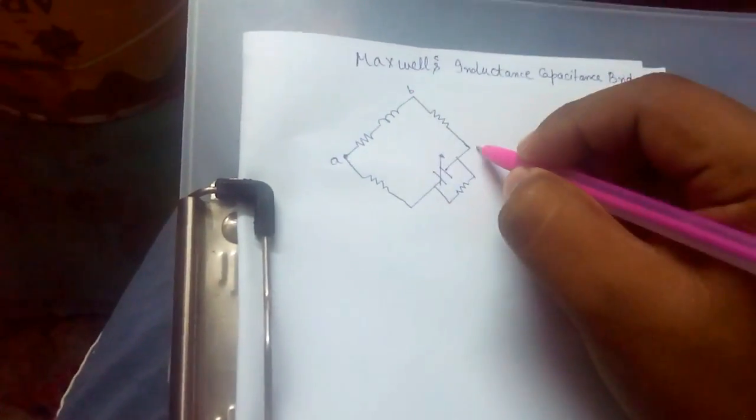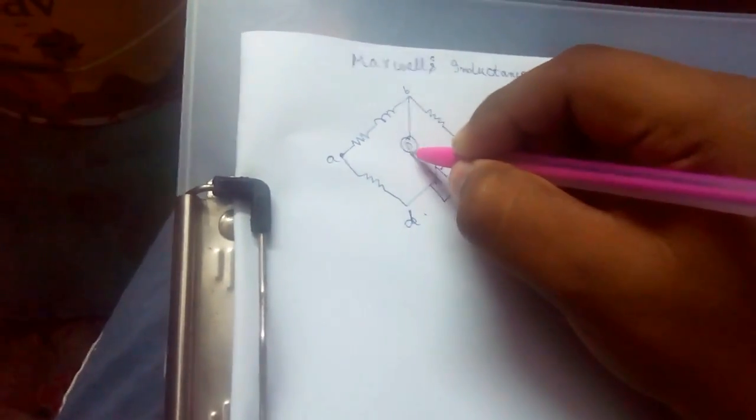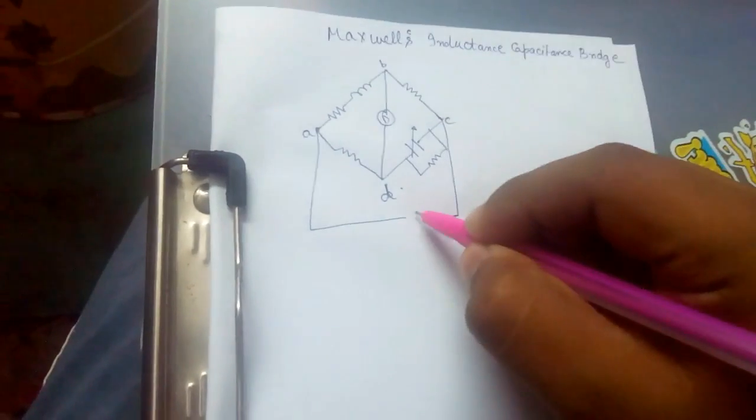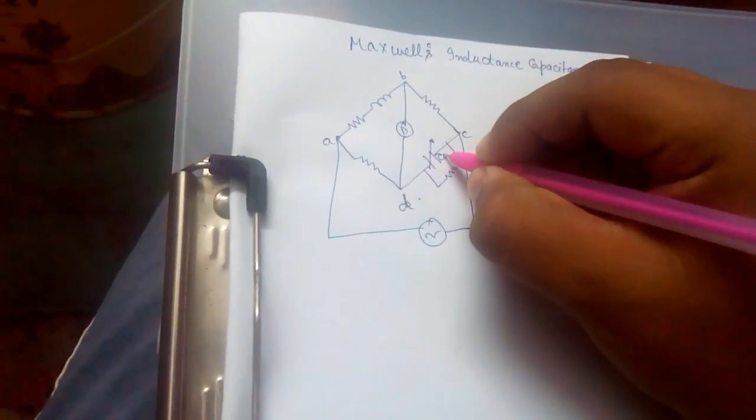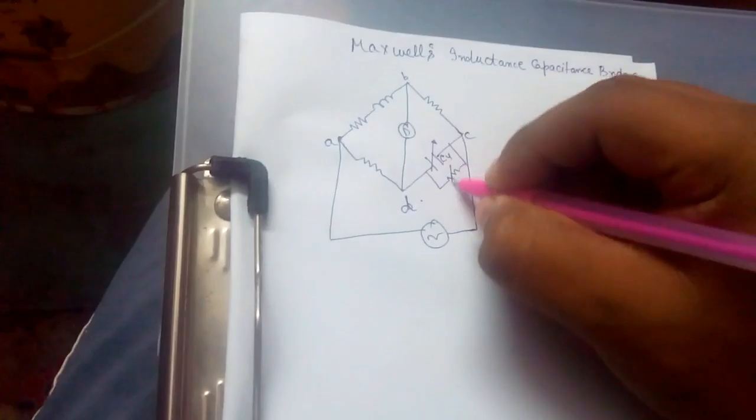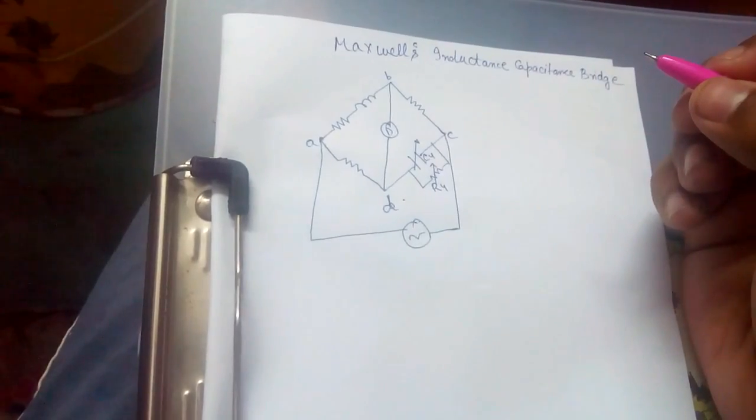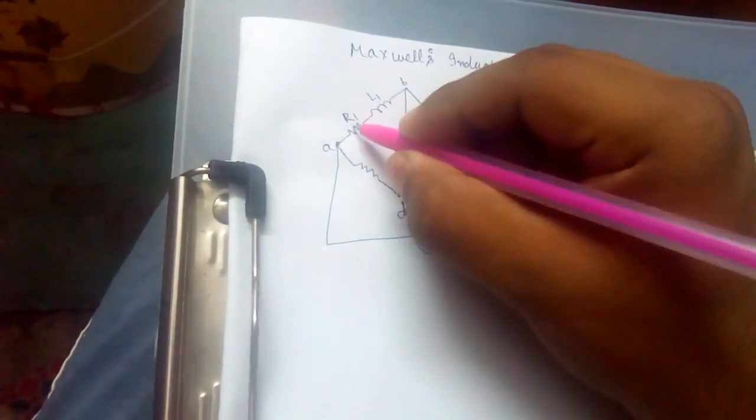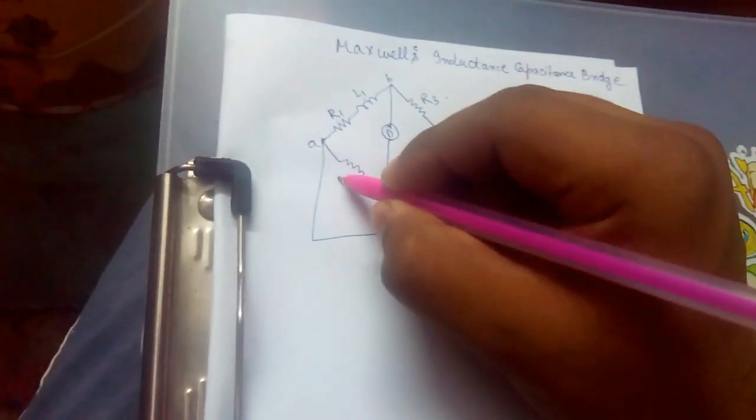We name it as ABCD and we connect a galvanometer across B and D which is connected to external power source. In this circuit, unknown variable capacitance resistance is connected in parallel with unknown non-inductive resistance. R1 and L1 are unknown resistance and inductance. R3 and R2 are non-inductive resistances.